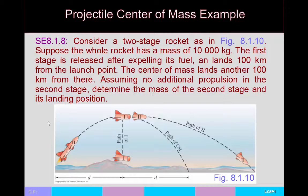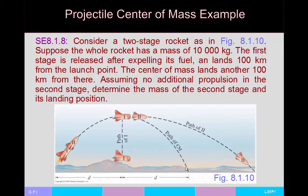Let's do a two-stage rocket example. A rocket has total mass 10,000 kg. The first stage is released after expending its fuel and lands 100 km from the launch point. If the whole rocket had stayed together it would have landed at 200 km. Assuming the two halves have equal mass and the separation occurs at the apex (so all velocity is horizontal), conservation of momentum means if the back half goes to zero speed, the front half doubles its speed, traveling an additional 100 km. So the second stage lands 300 km from the launch point.